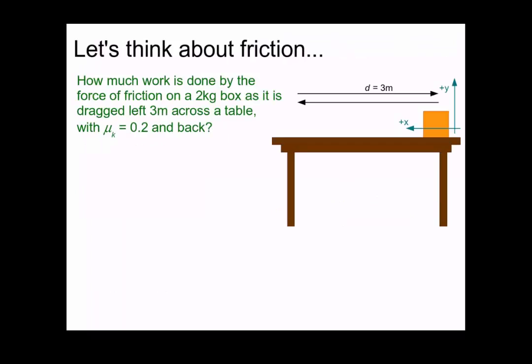To answer this question, let's think about a different force: friction. In this example, we have a 2 kilogram box as it's dragged 3 meters across a table with a coefficient of kinetic friction of 0.2 and back. We're interested in the work done by the force of kinetic friction over this closed path. Once again, the work is the force times the displacement times the cosine of the angle in between. The force of interest is the force of kinetic friction, which we write as the coefficient of kinetic friction, mu_k, times the normal force.